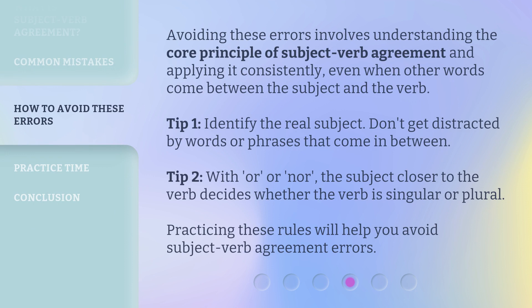Avoiding these errors involves understanding the core principle of subject-verb agreement and applying it consistently, even when other words come between the subject and the verb. Tip 1: Identify the real subject — don't get distracted by words or phrases in between. Tip 2: With 'or' or 'nor,' the subject closer to the verb decides whether the verb is singular or plural. Practicing these rules will help you avoid subject-verb agreement errors.